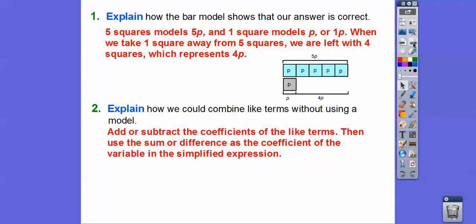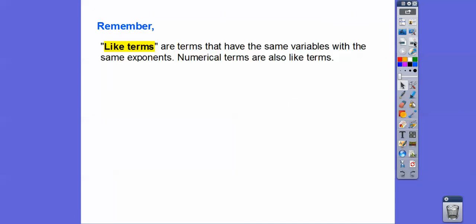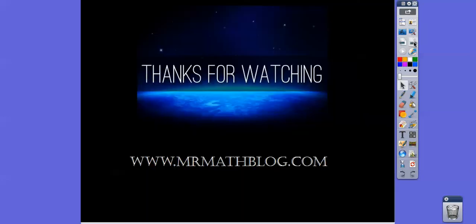We just add or subtract the coefficients. We use the sum or difference of the coefficients of the variables in the simplified expression. In the pie example, the coefficients were 5 and 1, so we subtract: 5 minus 1 equals 4, giving us 4p — plus the delivery charge of 12. In the previous example, we added 9n plus 4n: the coefficients 9 plus 4 give us 13n. Remember, like terms have the same variables with the same exponents, and numbers are also like terms.